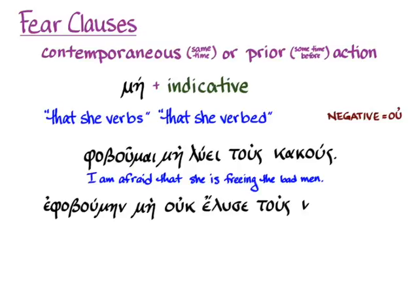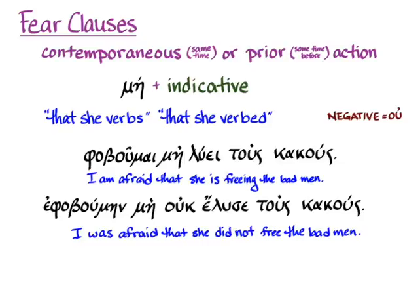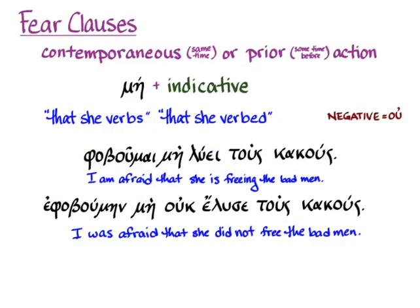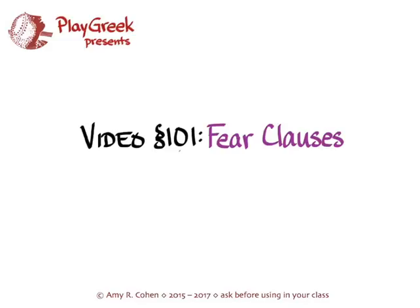Another example: φοβοῦμαι μή οὐ ἔλυσε τοὺς κακούς — 'I am afraid that she didn't free the bad men.' So fear clauses are really pretty simple: if the verb is subjunctive or optative, it expresses subsequent action — something you're afraid of that hasn't happened yet. If the verb is indicative, it's contemporaneous or refers to something that happened before the main verb. And that's what you need to know right now for fear clauses.